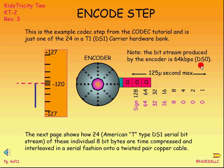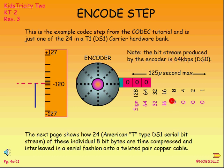We have 8 bits per sample and 8,000 samples per second because of Nyquist. So we're going to create a signal known as DS0 — digital signal level zero — a 64-kilobit signal per channel. The next page will show you the 24-channel American T-type system DS1 serial bit stream, because we're going to interleave 24 of these DS0s — 24 of these 64-kilobit signals — to create what's known as the T-type carrier system.